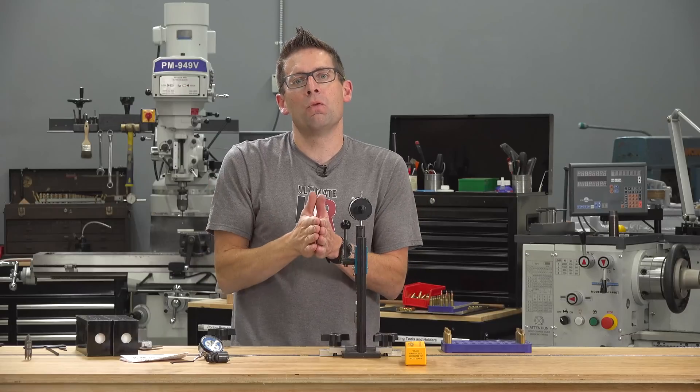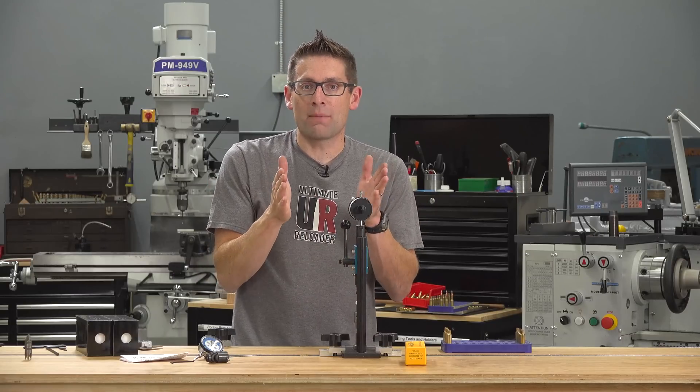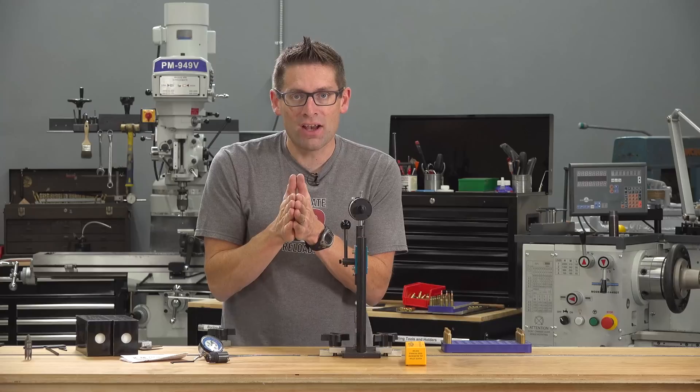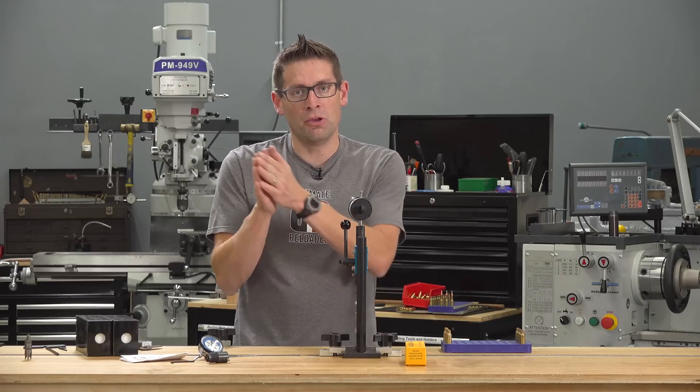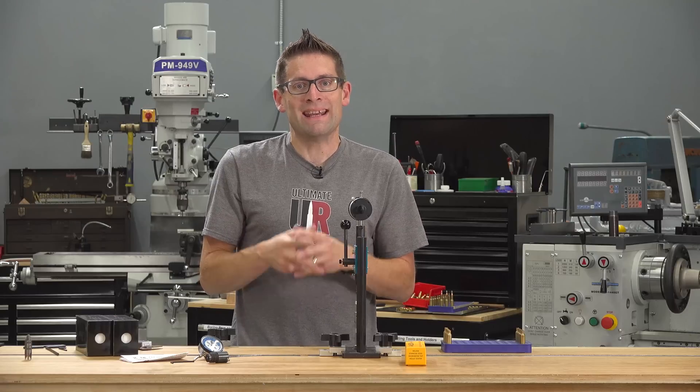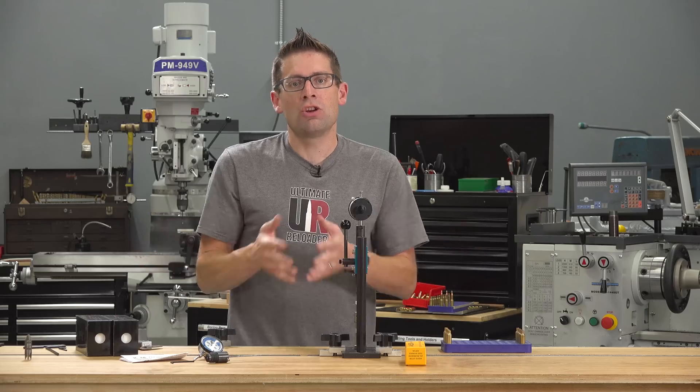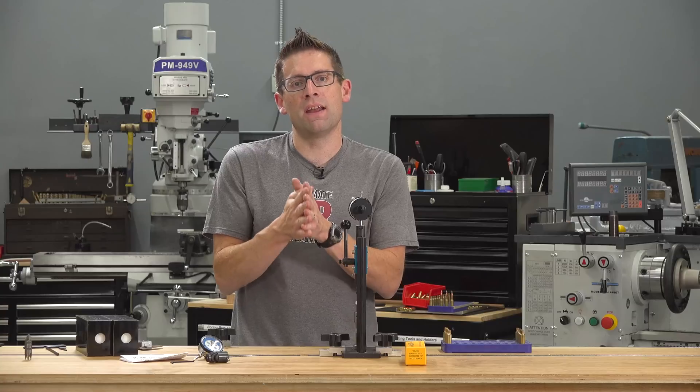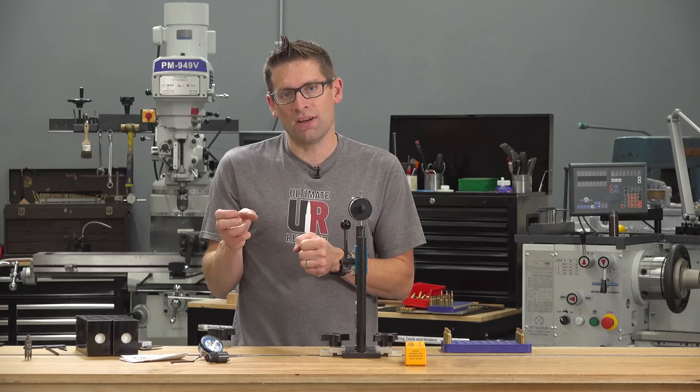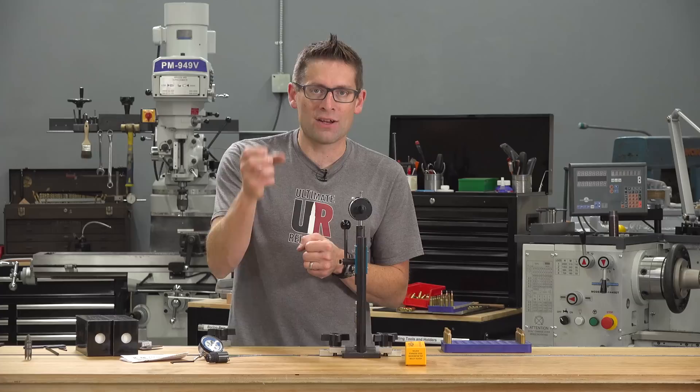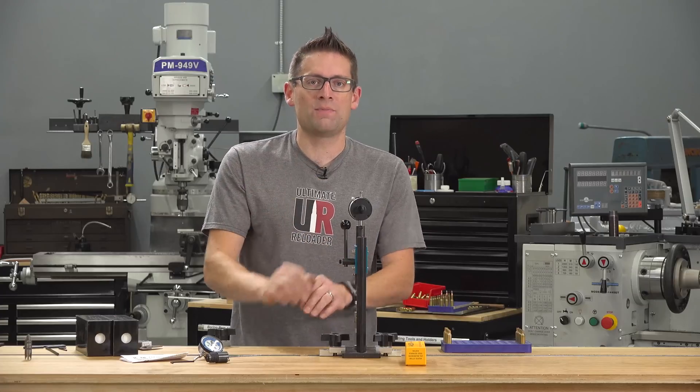Now why is this critical? Well it's going to tell you a lot about neck tension, about what's going on inside the necks of your brass, if they have a bit of lubrication properties due to some carbon buildup, if they're a little bit tacky or sticky because you've cleaned them in an ultrasonic cleaner, you're going to know a lot about what's going on with that bullet seating and that's critical because neck tension is going to affect your variation in velocity and it's going to affect pressures as the round is being fired.